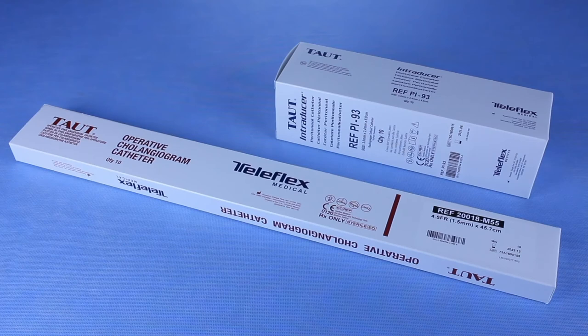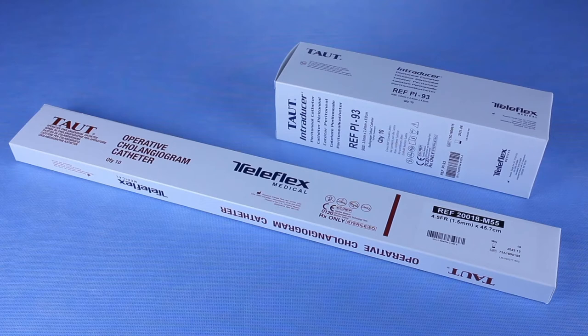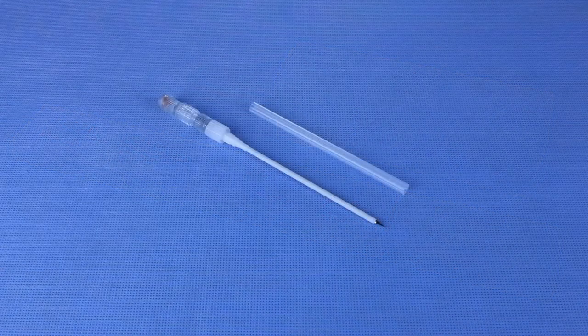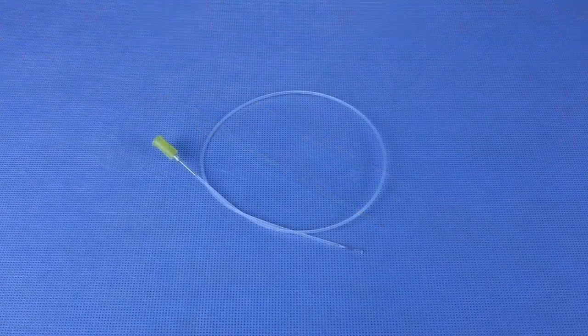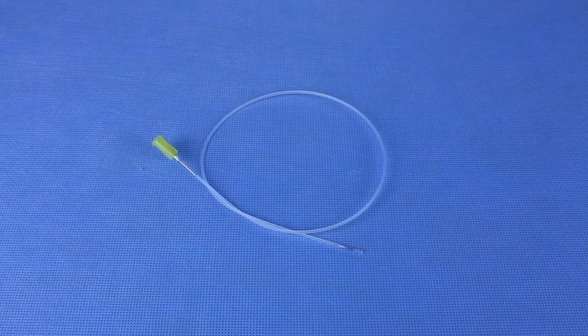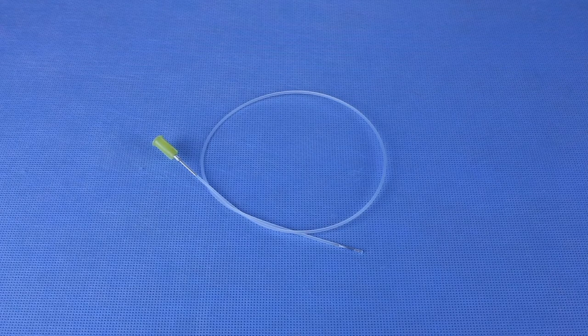Taut cholangiography catheters are used to facilitate the introduction of contrast media into the biliary ducts to obtain a cholangiogram during laparoscopic or open cholecystectomy. Taut introducer peritoneal catheters are used to provide an access port for taut catheters into the peritoneal cavity.